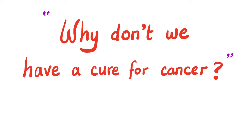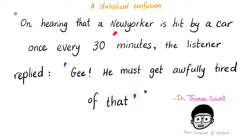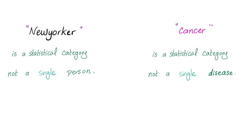Why don't we have a cure for cancer? On hearing that a New Yorker is hit by a car once every 30 minutes, the listener replied, 'Gee, he must get awfully tired of that.' As Dr. Thomas Sowell illustrates, a New Yorker is a statistical category, not a singular individual. Similarly, cancer is a statistical pathological category — it's not one disease. Which cancer are you talking about?